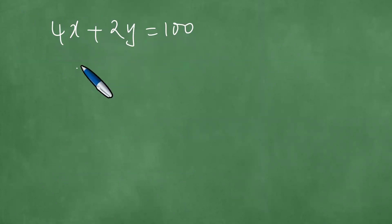Divide through by two, we have 2X plus Y equals 50, and Y then equals minus 2X plus 50.